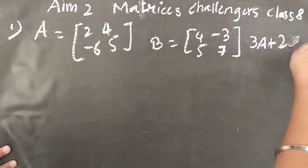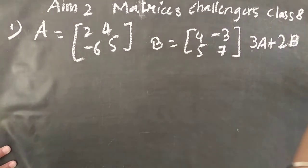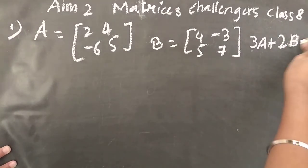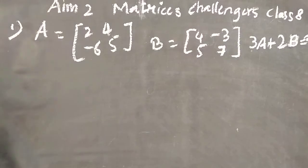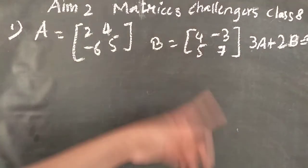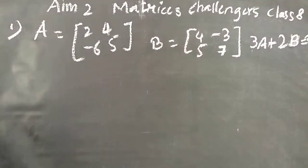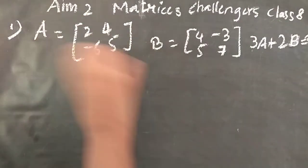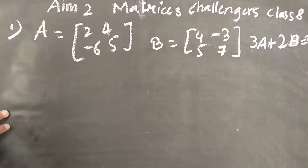We need to find what 3A plus 2B is equal to. So first we will find 3A, then we will find 2B, and finally we will add them up. That way it will be easy.